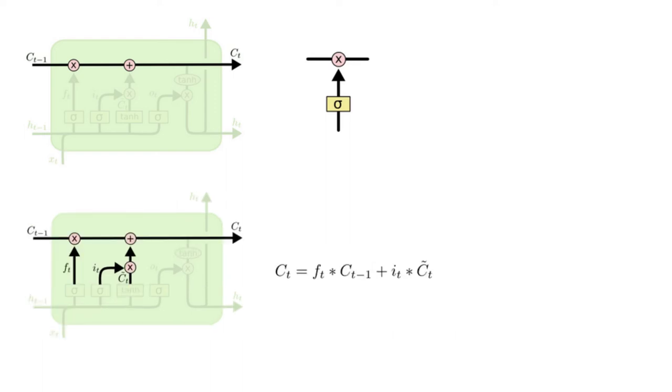It's now time to update the old cell state, c_{t-1}, into a new cell state, c_t. The previous steps already decided what to do. We just need to actually do it. We multiply the old state by f_t, forgetting the things we decided to forget earlier. Then we add i_t times C̃_t. This is the new candidate value scaled by how much we decided to update each state value.